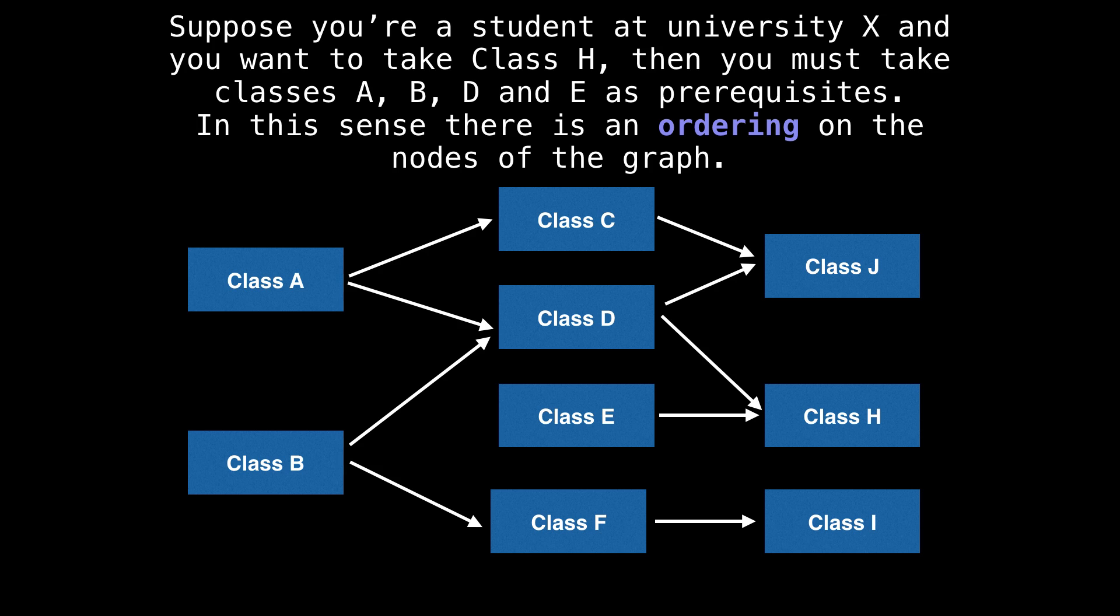Let's begin with an example. Suppose you're a university student and you really want to take class H. Well, before you can enroll in class H, you must first take classes D and E. But before taking class D, you must also take classes A and B, which have no prerequisites. So in some sense, there appears to be an ordering on the nodes of the graph. If we needed to take all the classes, the top sort algorithm would be capable of telling us the order in which we should enroll in classes such that we never enroll in a course which we do not have prerequisites for.